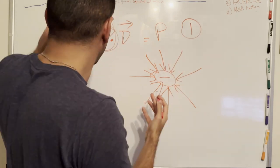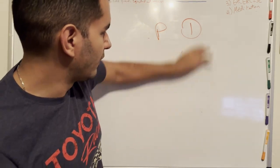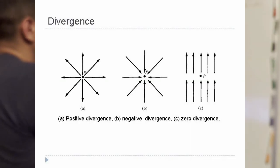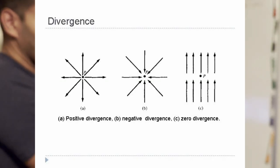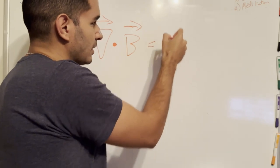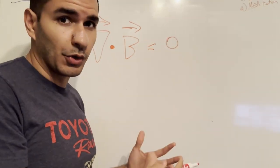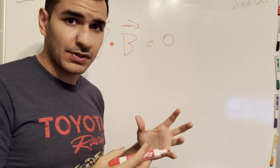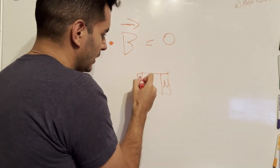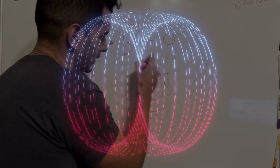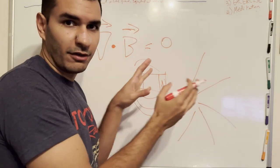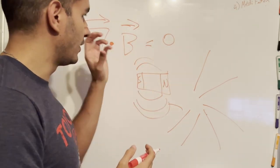Now for the second equation in Maxwell's equations — it's very similar but actually simpler. We are looking for some sort of divergence behavior, but instead of the electric field, we consider the magnetic field. Is there a magnetic charge? Is there a magnetic monopole? For magnetic fields, the answer is zero, because magnetism does not have this divergent behavior. A magnet will always have a north pole and a south pole, with curved field lines.